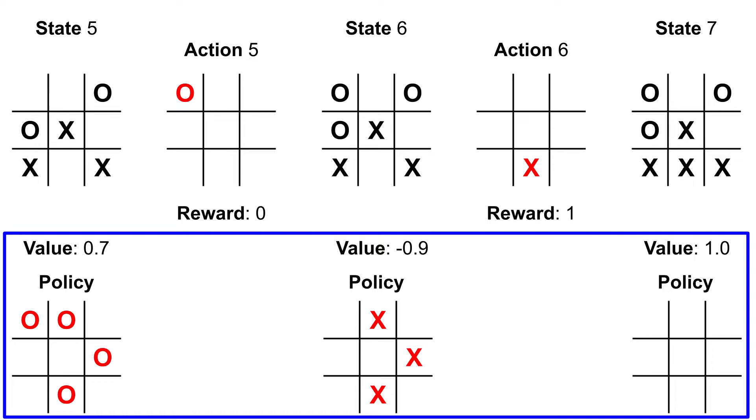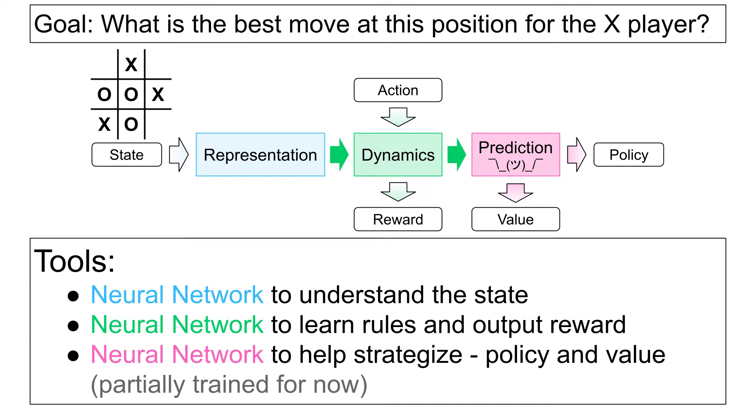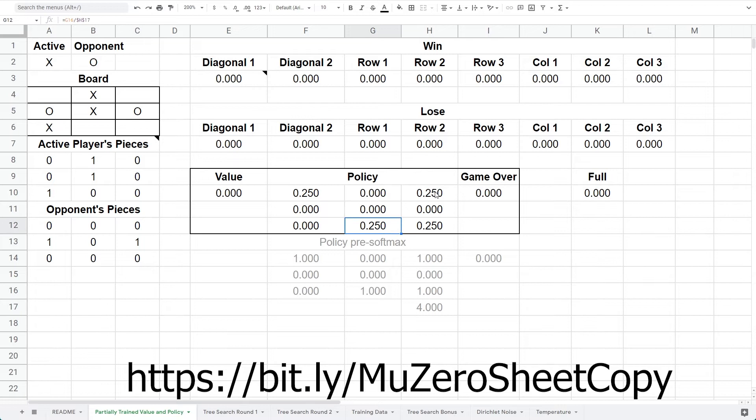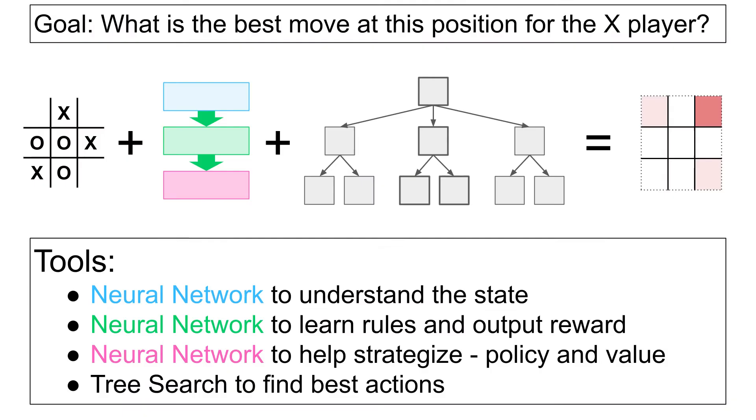Initially, the three neural networks in the MuZero agent are completely untrained and have random outputs. For the sake of explanation, I want you to imagine that the agent's networks are partially trained. Assume the networks can identify legal moves, and can detect a win or loss. However, the networks do not yet know what the good moves are or if the player is winning or losing. If you are curious about this partially trained network, there is one implemented in the spreadsheet linked on screen and in the description.